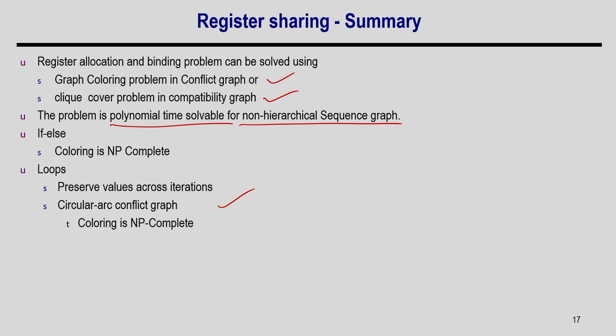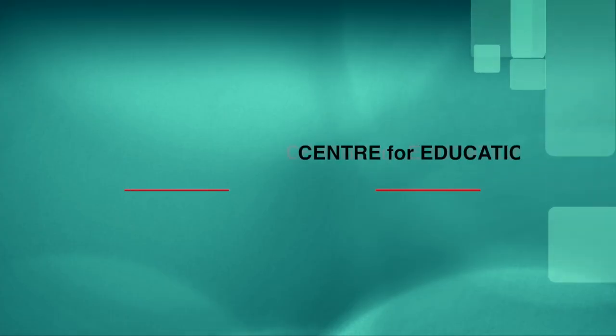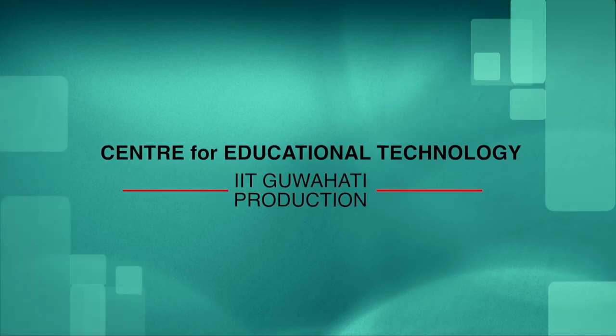To summarize: register allocation and binding finds the minimum number of registers to store all variables such that two variables can share a register when their lifetimes are non-overlapping. This can be solved via graph colouring of the conflict graph or clique covering of the compatibility graph. For non-hierarchical sequence graphs the problem is polynomial time solvable using the left edge algorithm; for hierarchical graphs with if-else, loops, or function calls it is NP-complete and requires heuristic algorithms. Thank you.